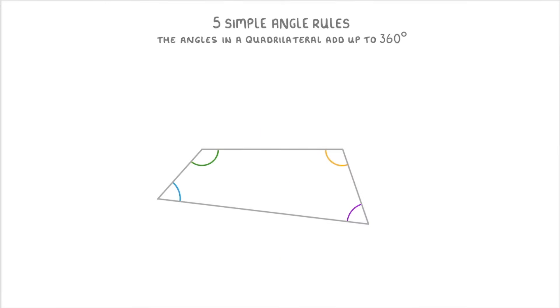The third rule is that the angles in a quadrilateral add up to 360 degrees. And remember, a quadrilateral is just a four-sided shape. So we can represent this rule as a plus b plus c plus d equals 360 degrees.